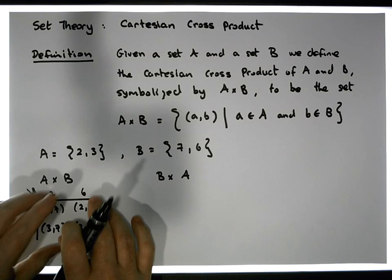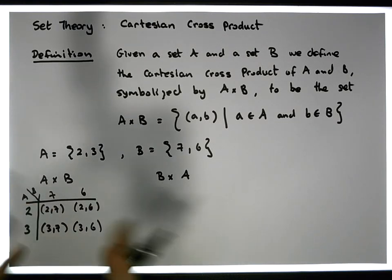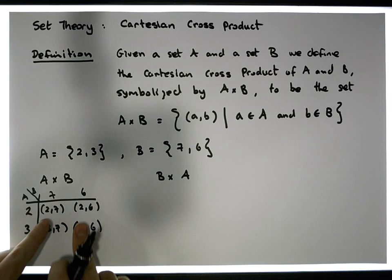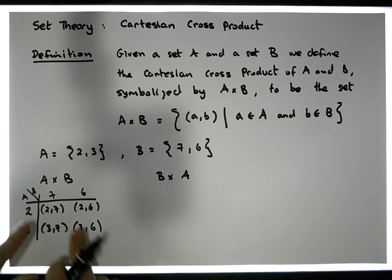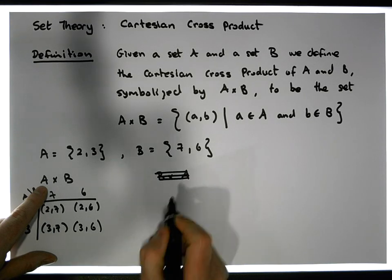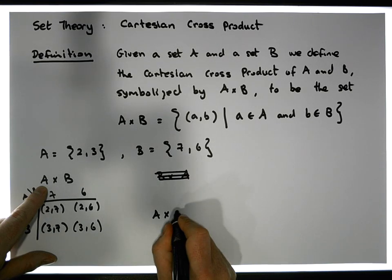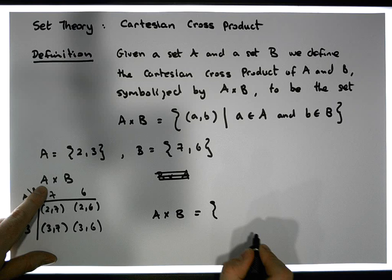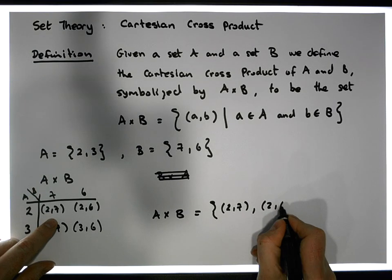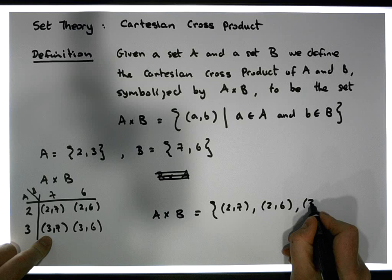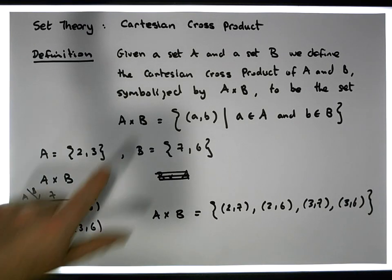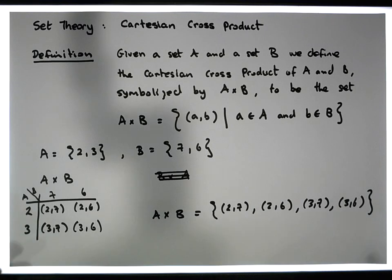And then what we do is we take these... This is only a tool for constructing what's inside this cross product. So we take these ordered pairs that we've just constructed, and we throw them into the set A×B. So we have A×B equals the set that contains the ordered pairs (2,7), (2,6), (3,7), and (3,6). So there we go, that's what the cross product is. It's that simple.